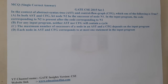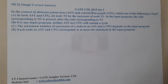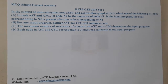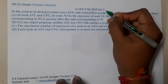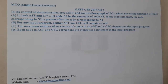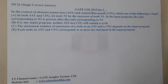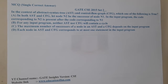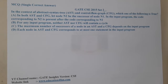Hello guys, we are back to the next lecture. This question belongs to GATE CSE 2015 Set 2. The given question is in the context of abstract syntax trees (ASTs) and control flow graphs (CFGs) — which of the following are true?